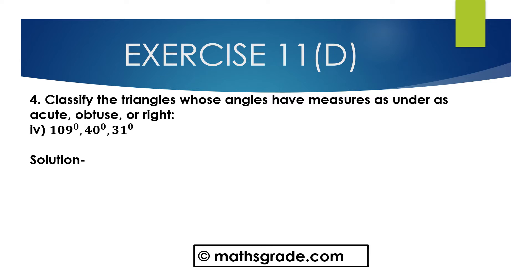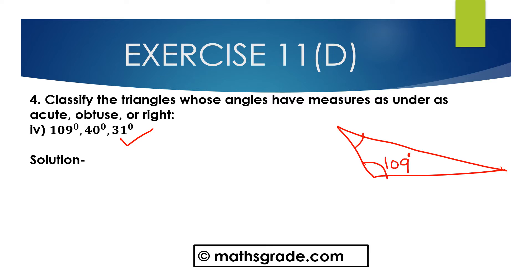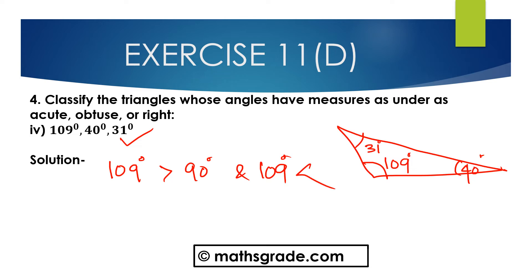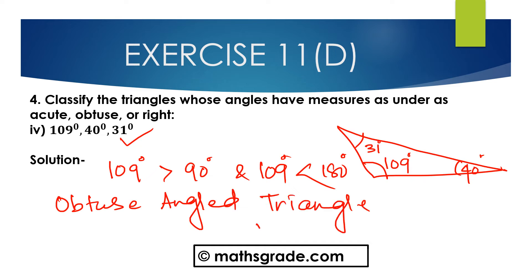Now question number 4th part: 109 degrees, 40 degrees, and 31 degrees. In this triangle, one of the angles is 109 degrees, which is more than 90 degrees but less than 180 degrees. We know any triangle that has one angle more than 90 degrees but less than 180 degrees is said to be an obtuse angle triangle. So 109 degrees is an obtuse angle, and this is an obtuse angle triangle.